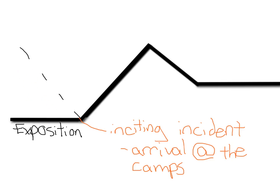So meeting Elie, meeting Beya, finding out about Moshe the Beadle, Moshe the Beadle getting deported, the waiting around with the phylacteries — things like that. The line going up — you need to know what this is called — and of course, this is called the complication.